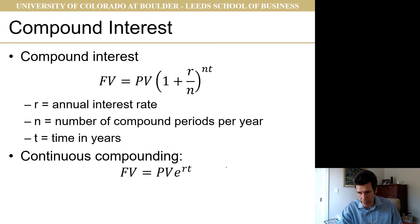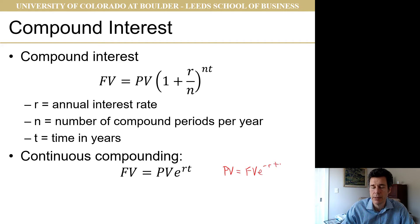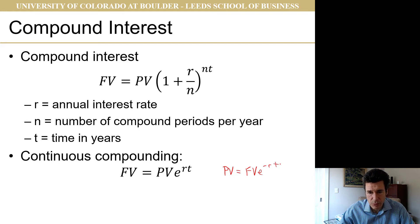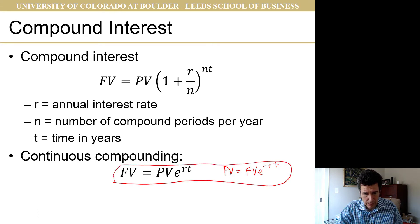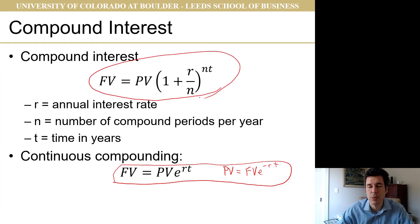For continuously compounded interest, the future value equals present value times e to the rt. And of course, present value equals future value times e to the minus rt, by moving e to the rt to the other side and dividing both sides by e to the rt. These are the formulas we need for finance. I personally have a mathematical preference for these continuous compounding formulas, which most of us have used before.